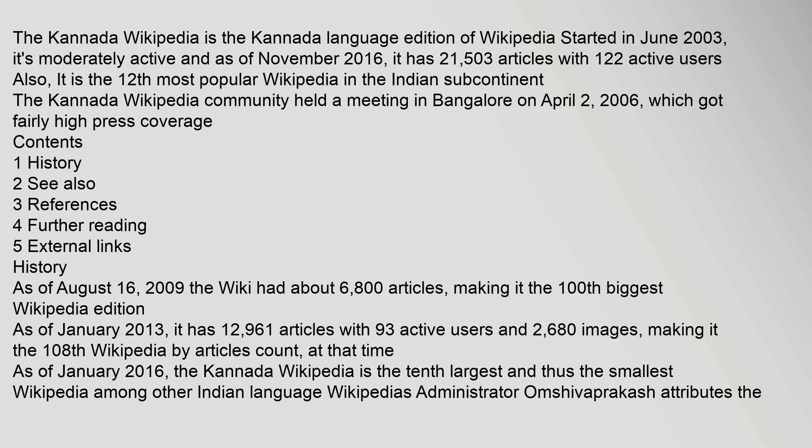The Kannada Wikipedia is the Kannada language edition of Wikipedia, started in June 2003. It is moderately active, and as of November 2016, it has 21,503 articles with 122 active users. It is also the 12th most popular Wikipedia in the Indian subcontinent.